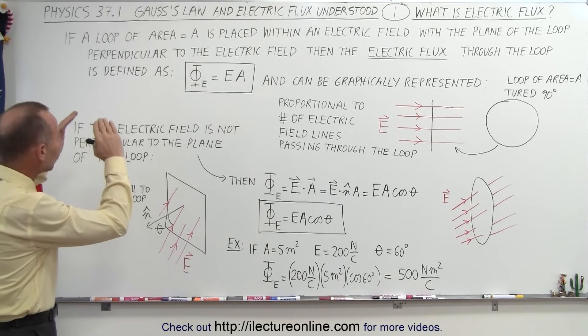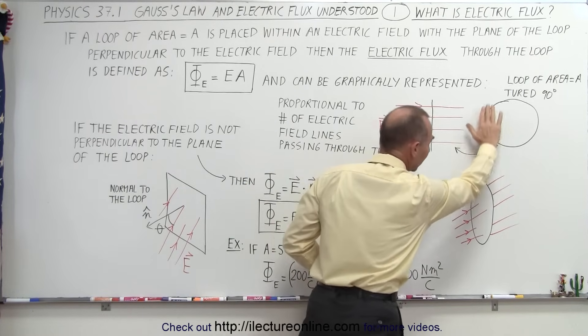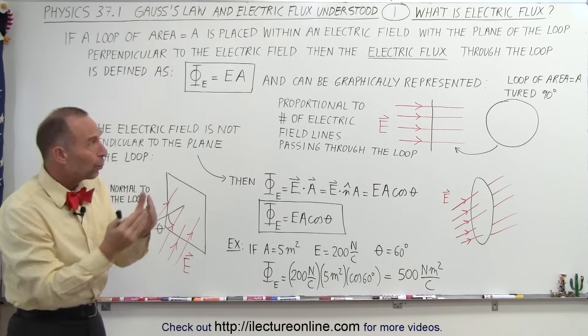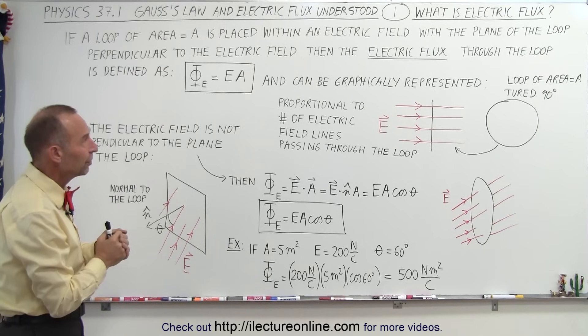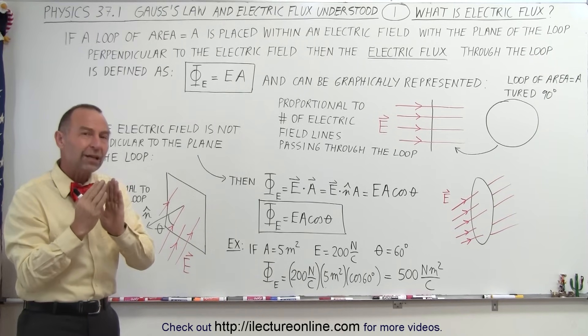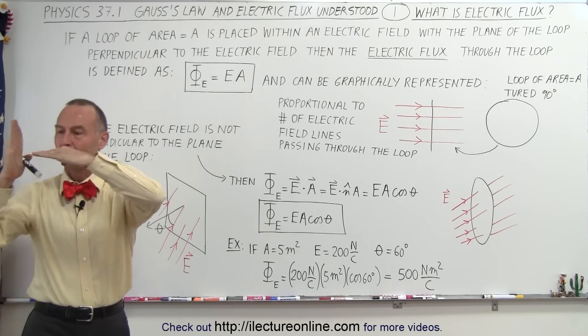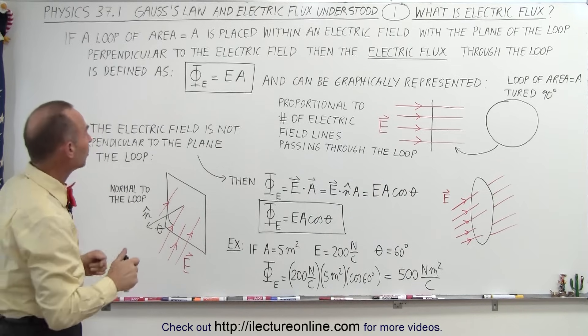Let's say that we have a loop of area A, just a simple loop like this, and the area of that is A. And we place that loop within an electric field such that the plane of the loop is perpendicular to the field. So here's the loop, here's the field, the electric field is perpendicular to the plane of the loop.